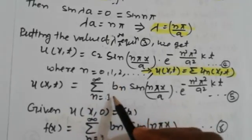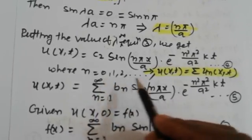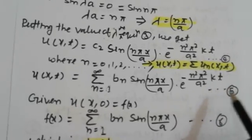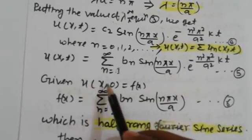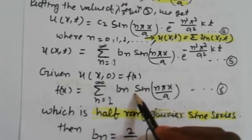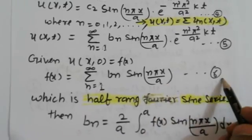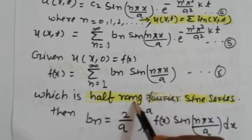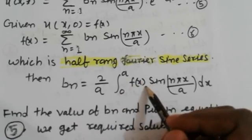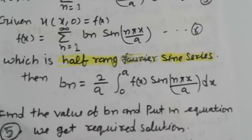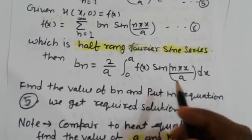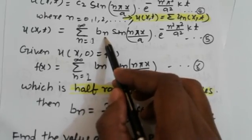The complete solution is u(x,t) = Σ (n=1 to ∞) bₙ sin(nπx/a) · e^(−n²π²kt/a²), labeled equation (5). Applying the initial condition u(x,0) = f(x), we get f(x) = Σ bₙ sin(nπx/a), which is a half-range Fourier sine series (equation 6). The coefficients are bₙ = (2/a) ∫₀ᵃ f(x) sin(nπx/a) dx. Find bₙ and substitute back into equation (5) to obtain the required solution.